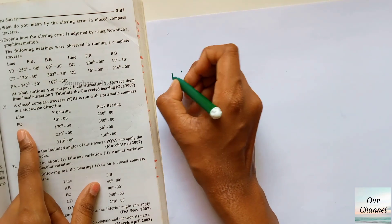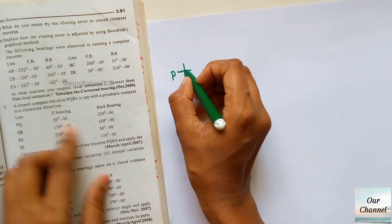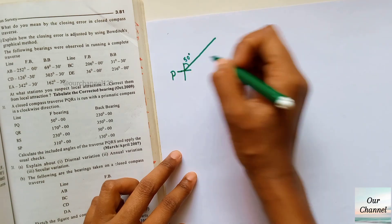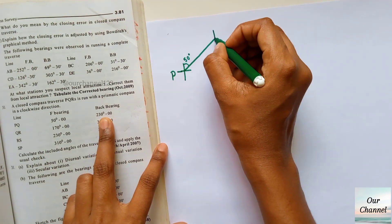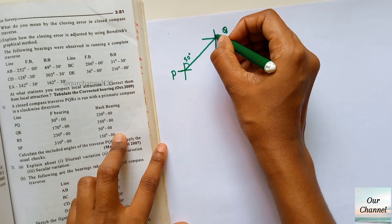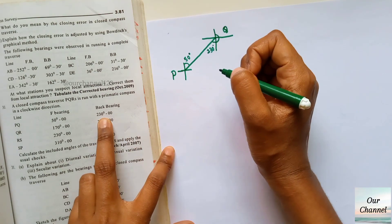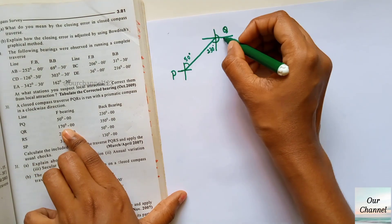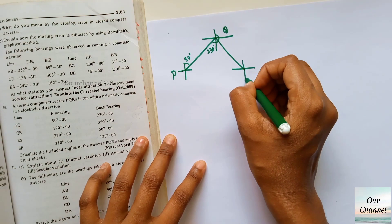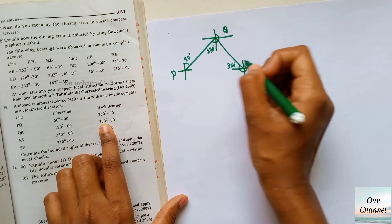An easy way to find the included angles is to first draw a rough diagram with the given fore bearings and back bearings. Now consider the line PQ — the fore bearing is in the first quadrant, 50 degrees. The back bearing will be in the third quadrant, 230 degrees. The next reading, 170 degrees, will be in the second quadrant, and the back bearing of QR is 350 degrees in the fourth quadrant.